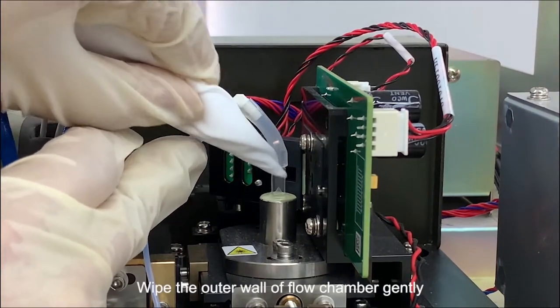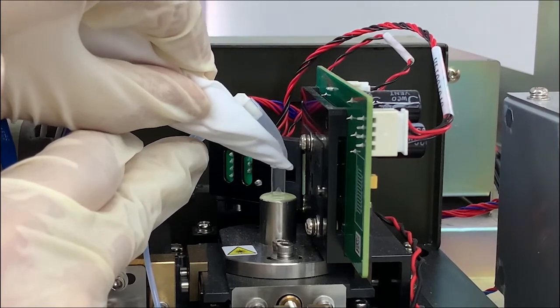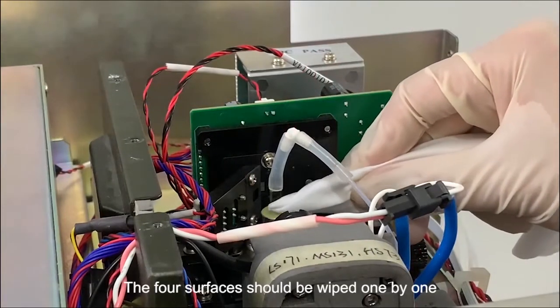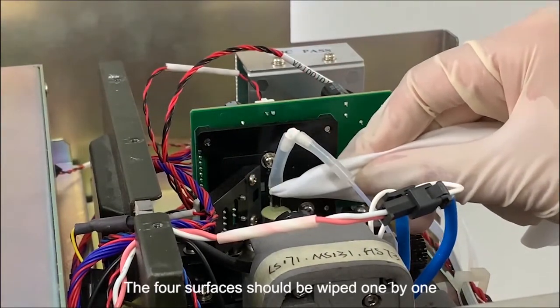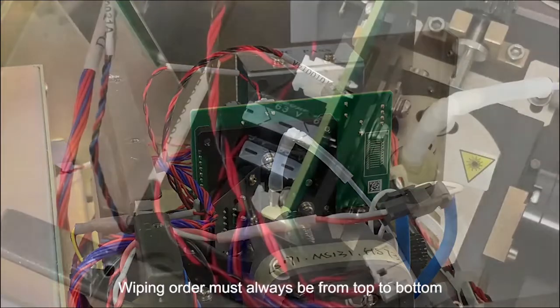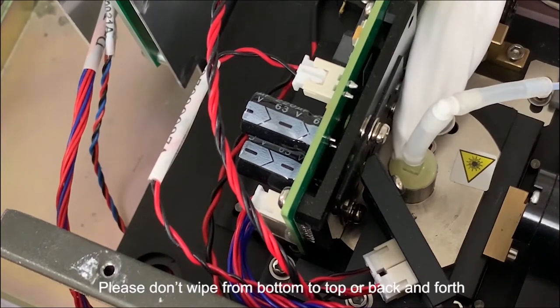Wipe the outer wall of flow chamber gently. The four surfaces of flow chamber should be wiped one by one. Wiping order must always be from top to bottom. Please don't wipe from bottom to top or back and forth.